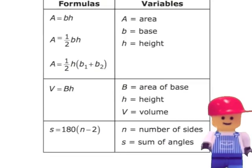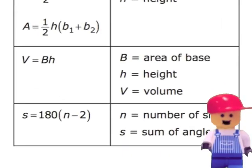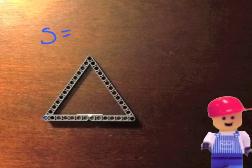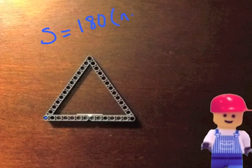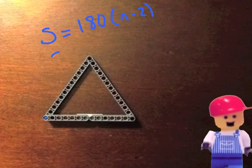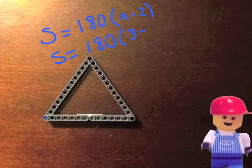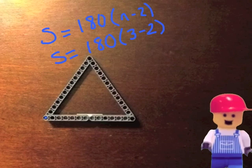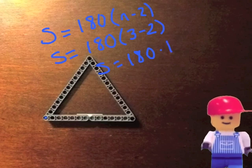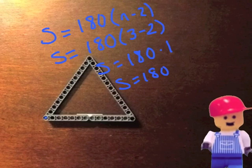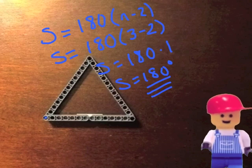The angles in a triangle add up to 180 degrees. We can prove this with the formula S equals 180 times the quantity N minus 2, where S stands for sum and N is the number of sides. So S equals 180 times the quantity 3 minus 2. Following order of operations, 3 minus 2 is 1, so 180 times 1 gives us 180 degrees — which is what we got when we measured. The three angles in a triangle always add up to 180 degrees.